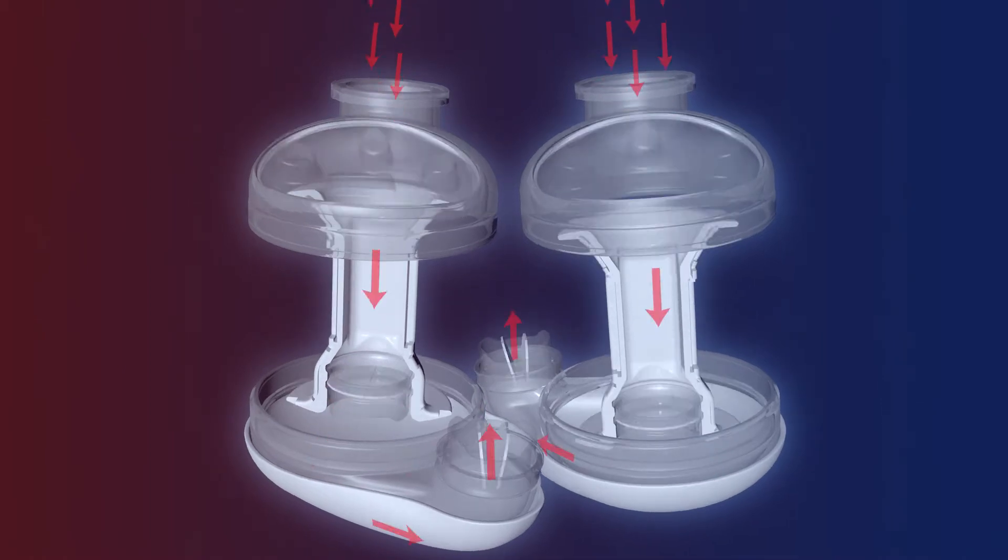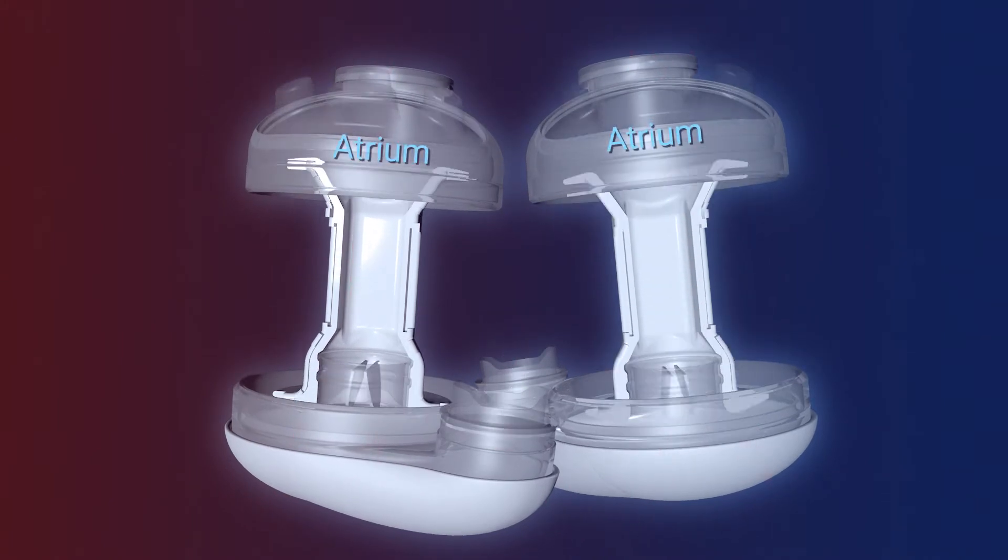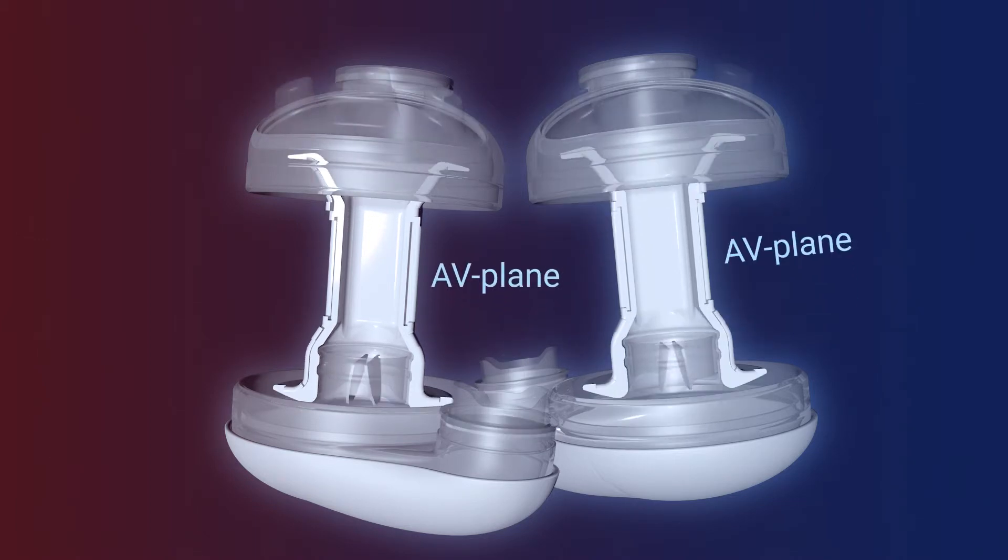As in a human heart, each pump in Real Heart TAH also consists of an atrium and a ventricle with a valve cylinder in between, equivalent to the AV plane.